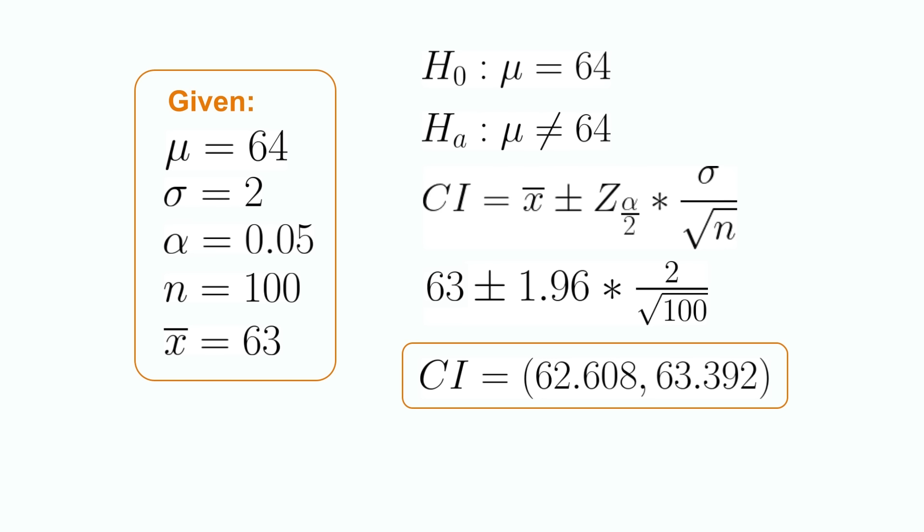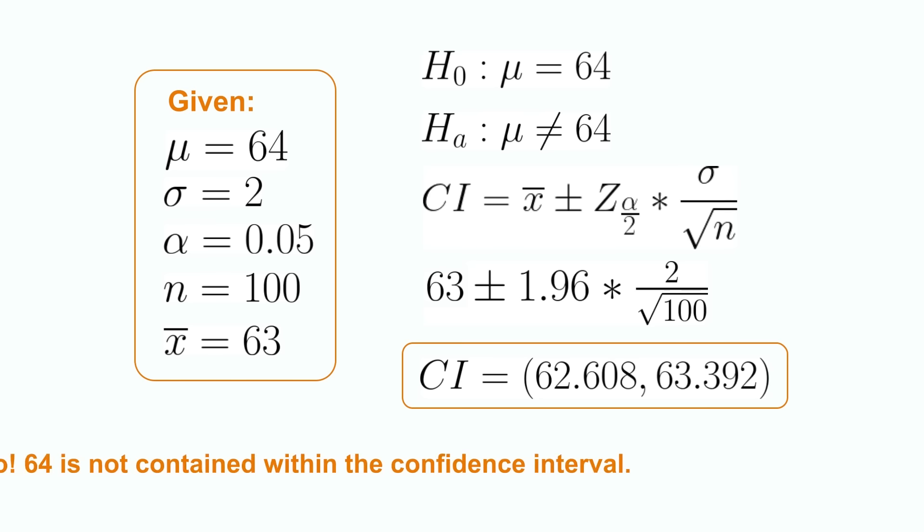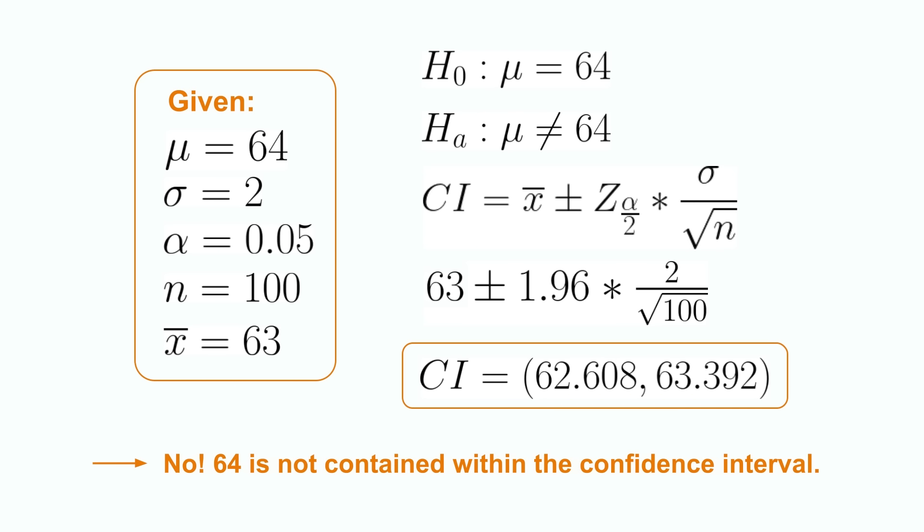Applying the confidence interval formula for the population mean when sigma is known, we obtain a confidence interval of 62.608 to 63.392. Because the hypothesized value of 64 is not contained within the interval, we reject the null hypothesis and conclude that the average height for women in the United States is not 64 inches.